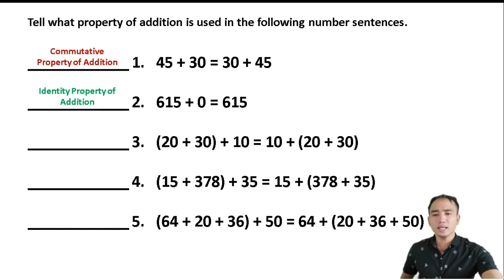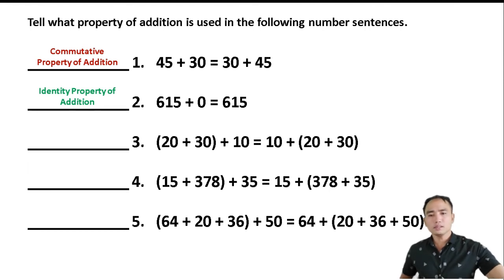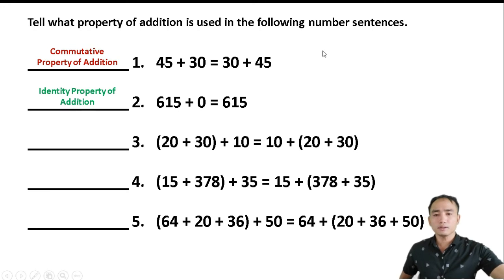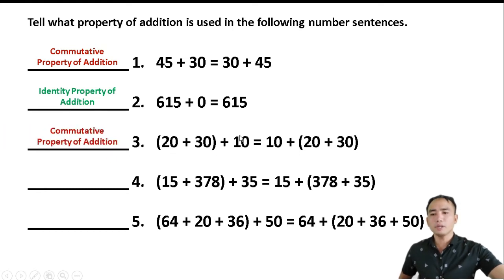Number 3: (20 plus 30) plus 10 equals 10 plus 20 plus 13. Here we are only changing the position of the numbers, so this is the Commutative Property of Addition.